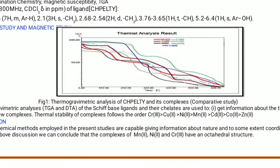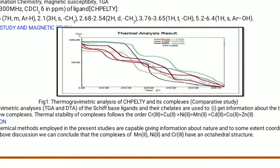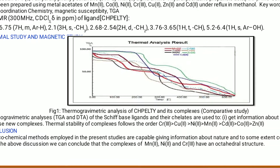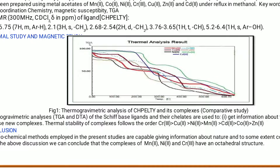The thermal stability order of the complexes is as follows: chromium(III) complexes having an oxygen donor set are supposed to be more stable than copper, then nickel, then manganese, then cadmium, cobalt, and zinc. This can be proved by observing the thermogravimetric data.